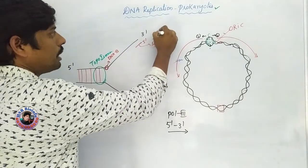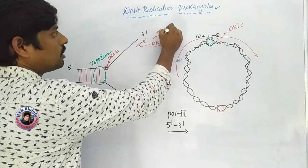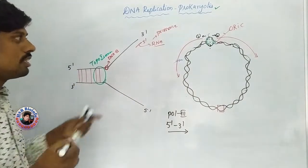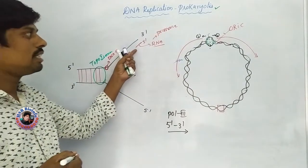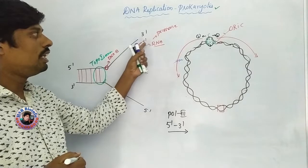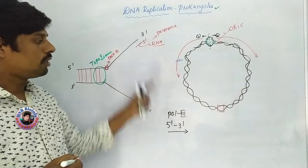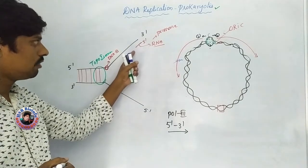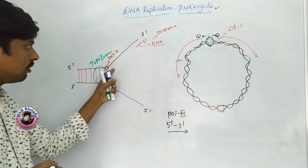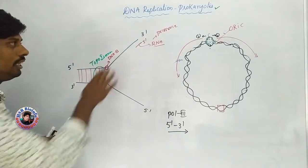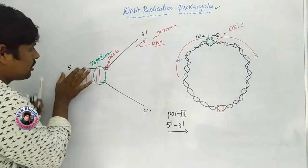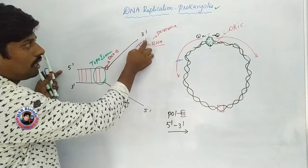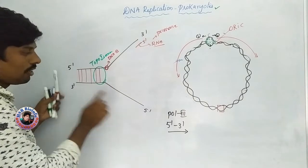If you want to add the primer, you can add the primer. Now, we have to add the primer. It is a 5' end, so it is 3'. This is the 3' end, so it is 5'. This has the same orientation — it is 3' here and 5' here.